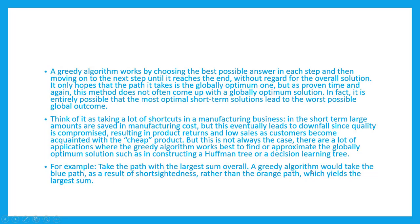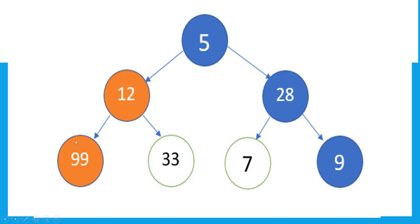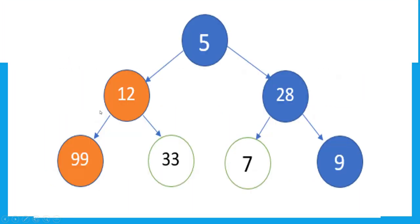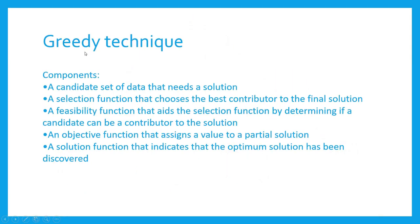For example, take the path with the largest sum. The greedy algorithm would take the blue path as a result of short-sightedness rather than the orange path which yields the largest sum. You can see in the next slide that the greedy algorithm chooses the blue path because in the orange path, if you look at it, the blue path appears locally optimal. So the greedy approach will choose the path 5, 28, and 9 — the blue colored path.